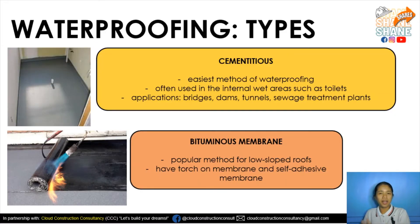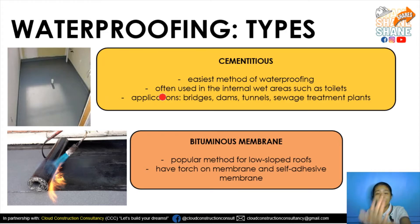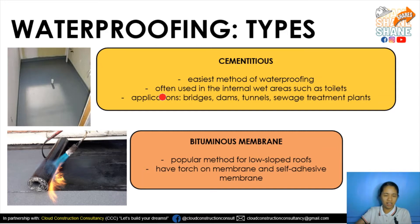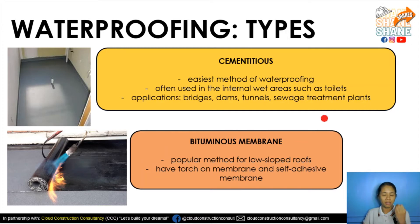Moving forward, what are the types of waterproofing? We have the cement tissues — the easiest method of waterproofing. It is simply applied from a container as a pre-made coating. It is often used in internal wet areas such as toilets, and can also be used for bridges, dams, tunnels, and sewage treatment plants.